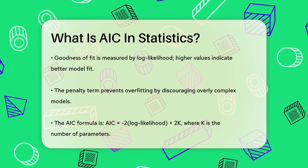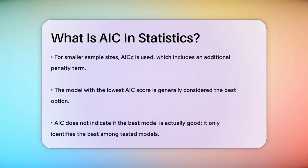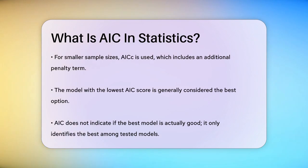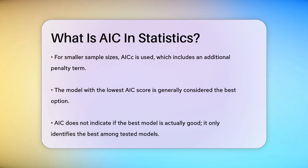When comparing models, the one with the lowest AIC score is generally considered the best. However, it's important to note that AIC doesn't tell you if the best model is actually good — it just tells you which one is the best among the ones you've tested. So if all your models are poor, AIC will still pick the best of the bunch, but you might need to run additional tests to see if the relationship between variables is significant.